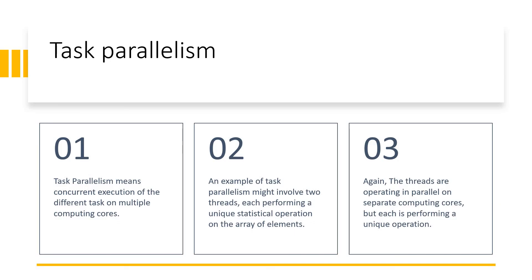A simple example: take two threads, each performing a unique operation on an array of elements. Thread one performs one unique operation, Thread two performs another unique operation — both running in parallel on separate computing cores. Like having two people working on two completely different tasks simultaneously. That's exactly task parallelism: concurrent execution of different tasks on multiple computing cores.